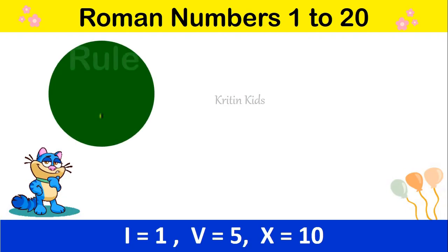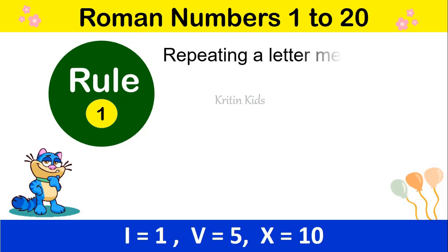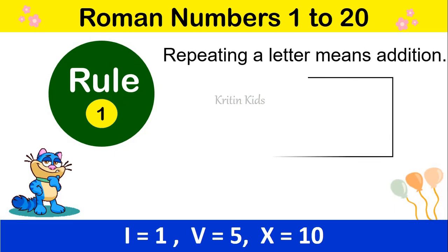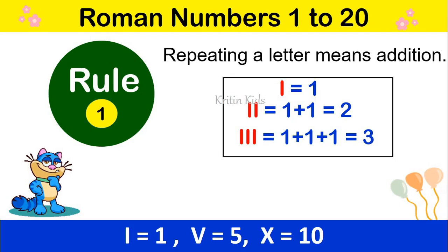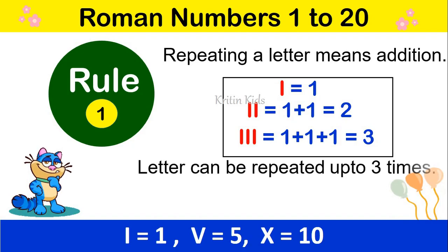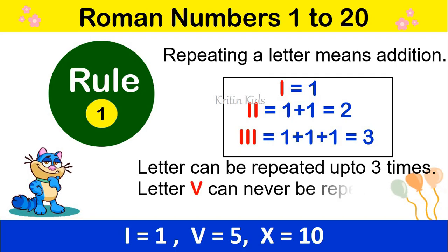Rule No. 1: Repeating a letter means addition. Like, I is equal to 1. When we write I and I, it means 1 plus 1, that is 2. I, I, I — that is 1 plus 1 plus 1, that is 3. Note: a letter can be repeated up to 3 times only. And letter V can never be repeated.